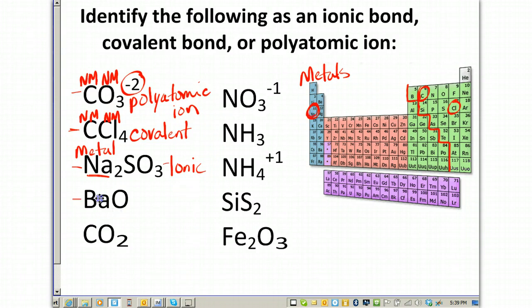Next is barium and oxygen, and barium is located here. Element number 56, and automatically because that is on the metal side, that makes this ionic.